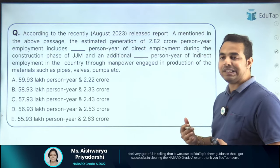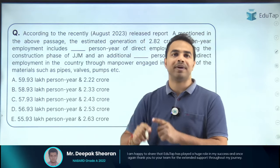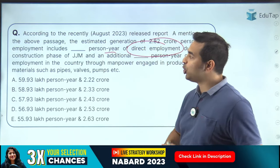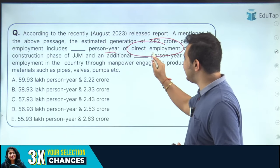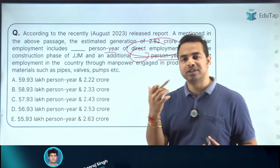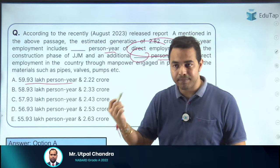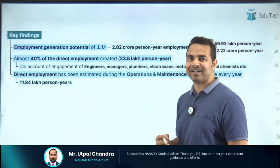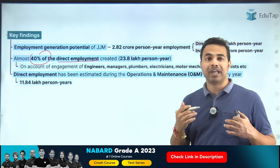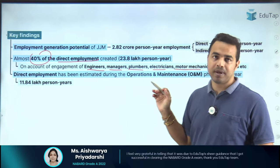The next question is on direct and indirect employment figures. Employment includes 59.93 lakh person-years of direct employment during the construction phase of Jal Jeevan Mission, and 2.22 crore person-years of additional indirect employment through production of materials such as pipes, valves, pumps, etc. Notably, 40% of direct employment created 23.8 lakh person-years through engagement of engineers, managers, plumbers, electricians, motor mechanics, and chemists.